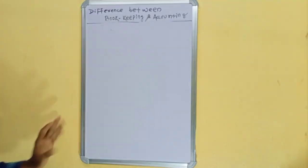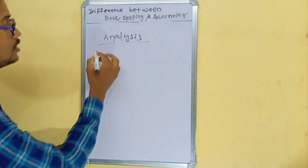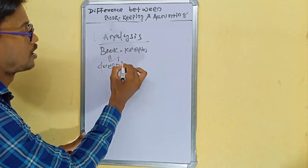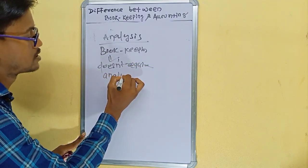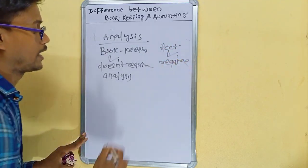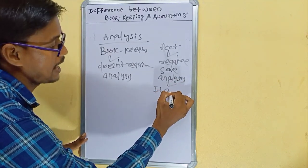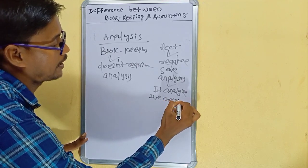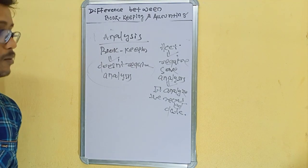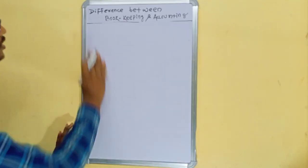The next term is analysis. Bookkeeping does not require any analysis. But accounting requires some analysis — it analyzes the recorded data. In bookkeeping, no analysis is required, but in accounting, analysis is required.